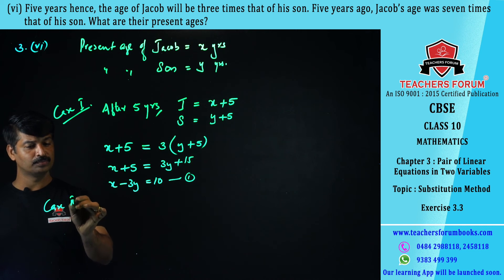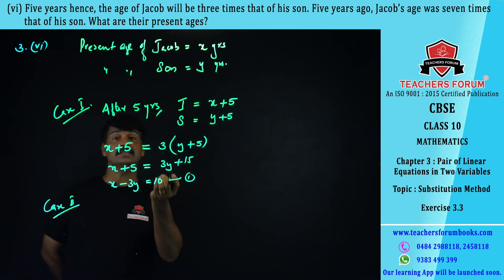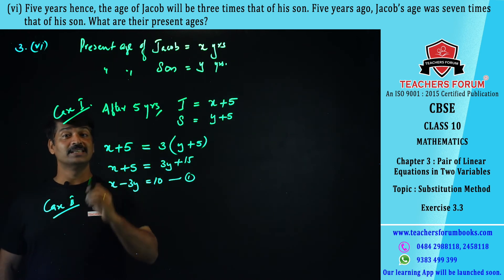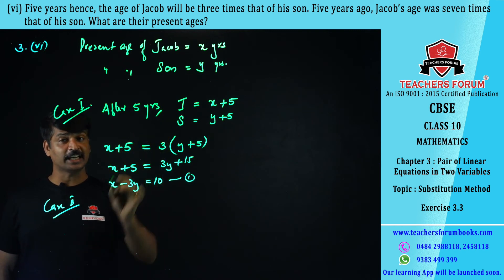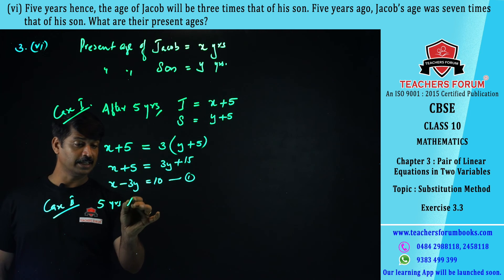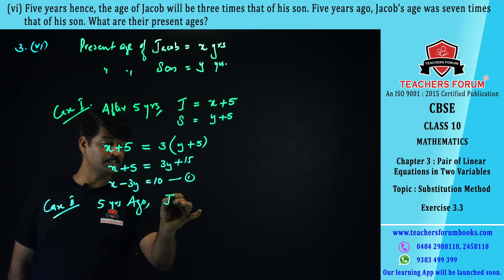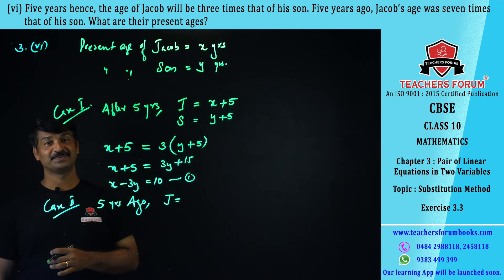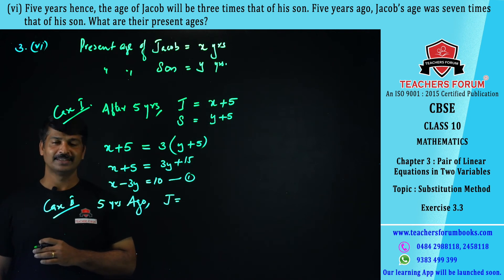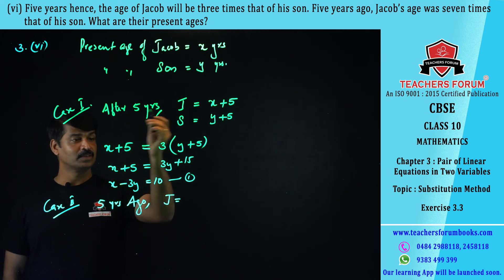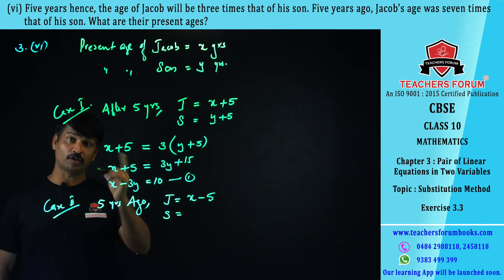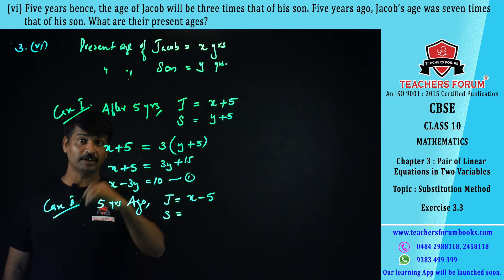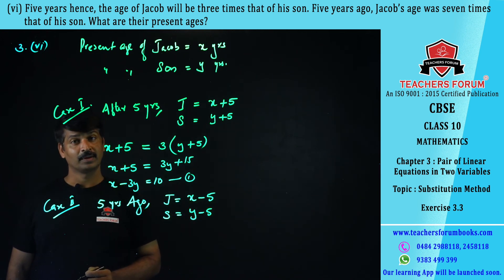Case 2: five years ago, Jacob's age was x − 5 and his son's age was y − 5. It is given that five years ago Jacob's age was seven times his son's age.